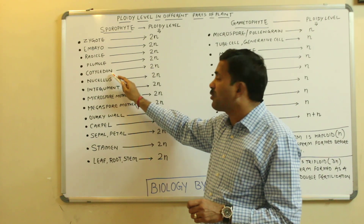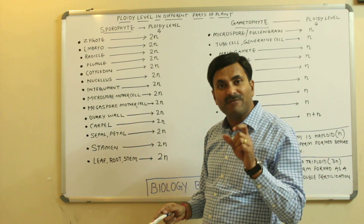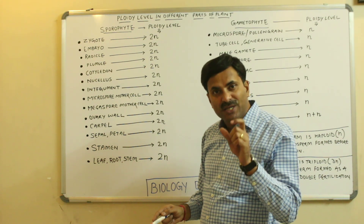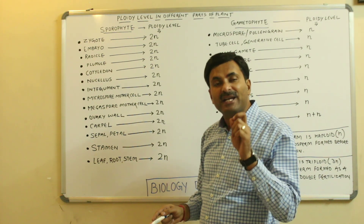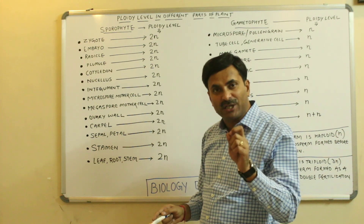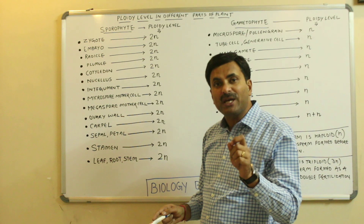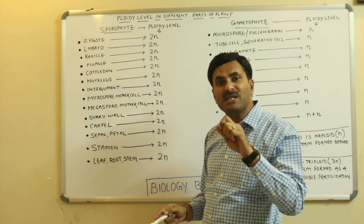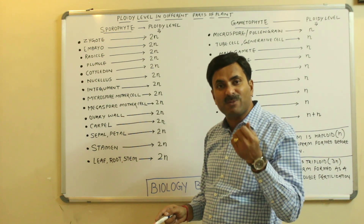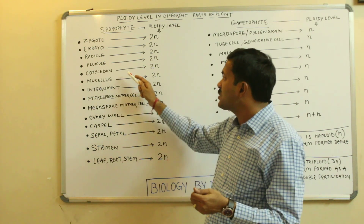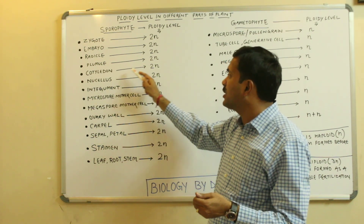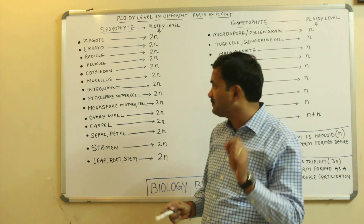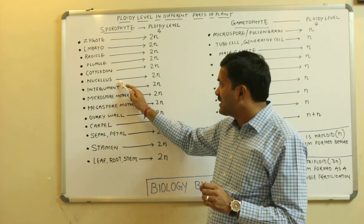Now, if I talk about the cotyledon — in dicot seeds two cotyledons are there, and in monocot seeds there is one cotyledon. Cotyledon, whether present in a monocot seed or a dicot seed, always has the ploidy level of 2N.